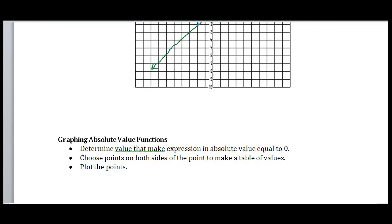Let me use this knowledge to outline some steps for graphing absolute value equations. Step one: determine the value that makes the expression inside the absolute value equal to zero — you might have expressions like 2x plus 3 or 5x minus 4. Step two: choose points on both sides of that value, meaning one number less and one number greater. Then make a table of values and graph by plotting points.